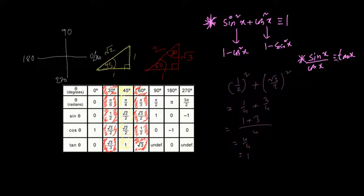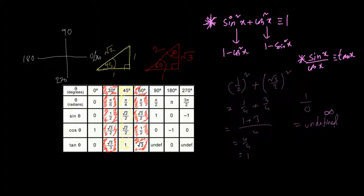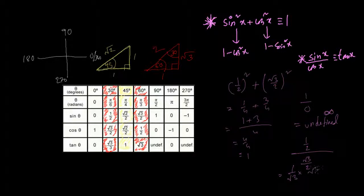Let's check with common angles: sine(90°)/cos(90°) = 1/0, which is undefined — and tan(90°) is also undefined. For sine(30°)/cos(30°) = (1/2)/(√3/2) = 1/√3. And tan(30°) = 1/√3, which rationalizes to √3/3. So the identity sin(x)/cos(x) = tan(x) holds. Trigonometric identities are things that can be verified arithmetically using the common angle values.